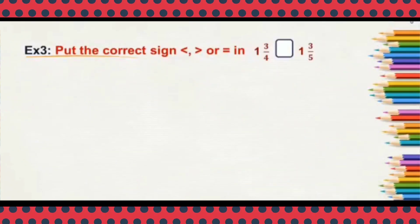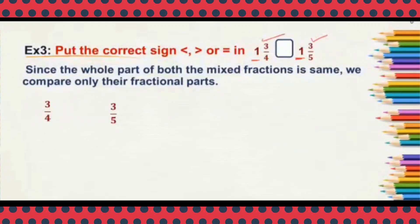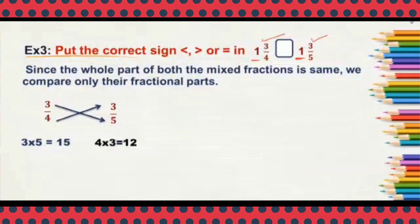Next example: compare these mixed fractions. When you observe this, the whole part of both mixed fractions is the same. When it is the same, we can compare only the fractional part. That means 1 and 1 remain as they are — we will only compare between 3 by 4 and 3 by 5. Do the cross multiplication: 3 into 5 and 4 into 3. 3 times 5 will be 15.